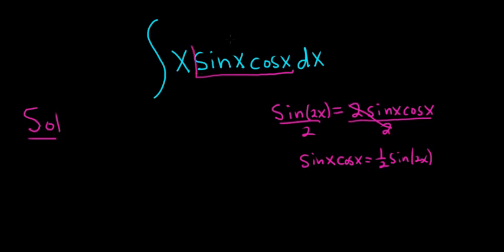And so now we can replace the sine x cosine x with 1 half sine 2x. And we can pull that 1 half out. So we have x sine 2x.